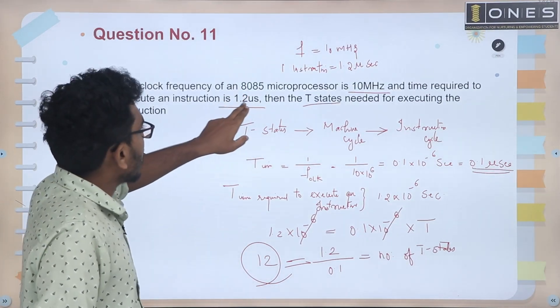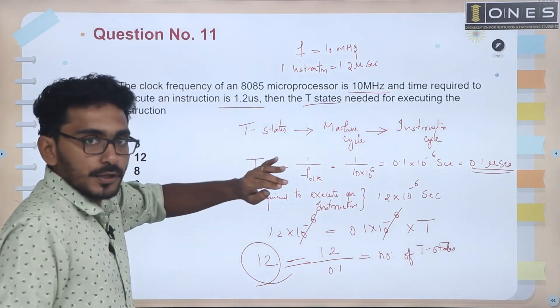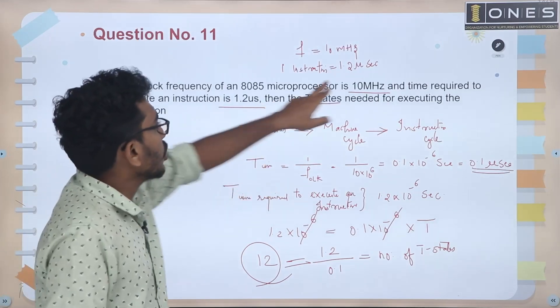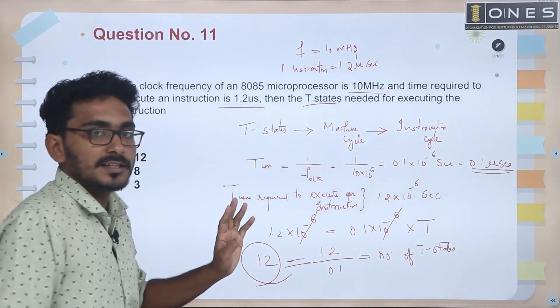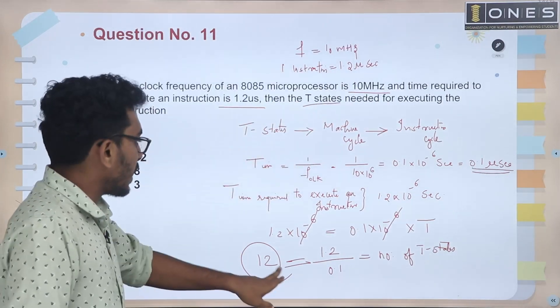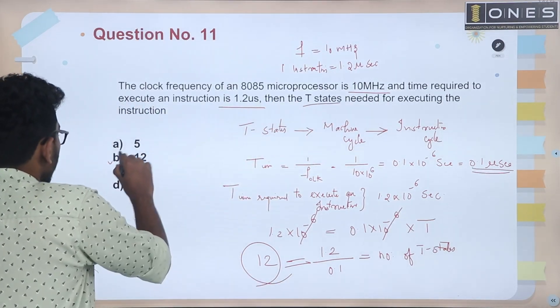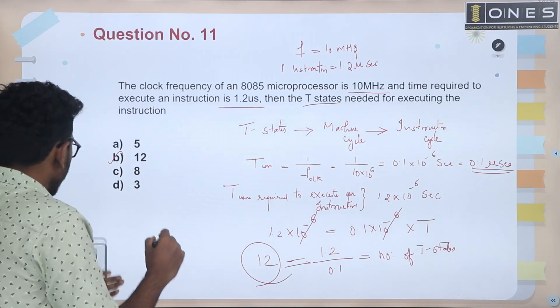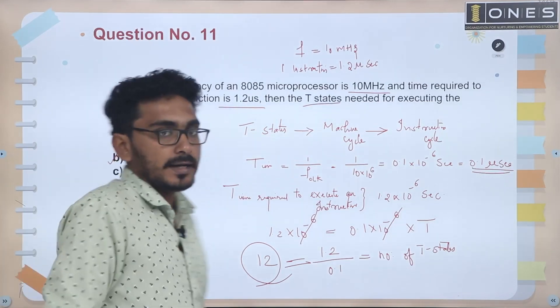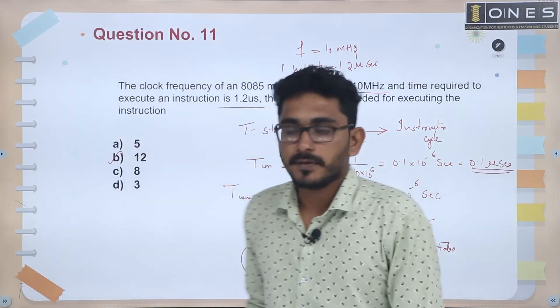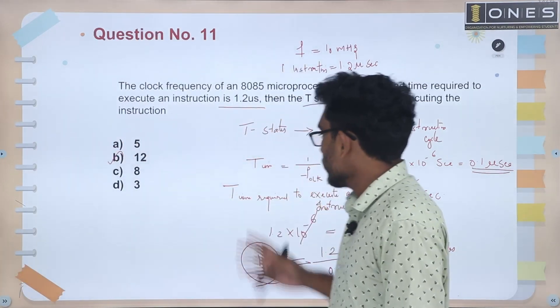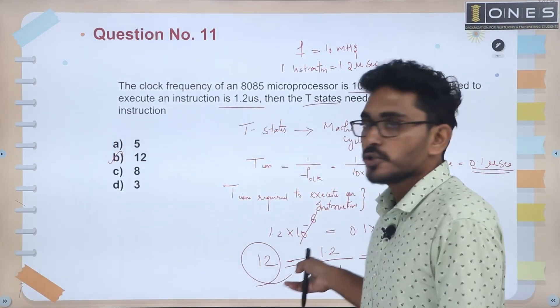Instruction time is 1.2 microseconds, clock frequency is 10 MHz. The answer is 12. Option B is the correct answer. This is the solution.